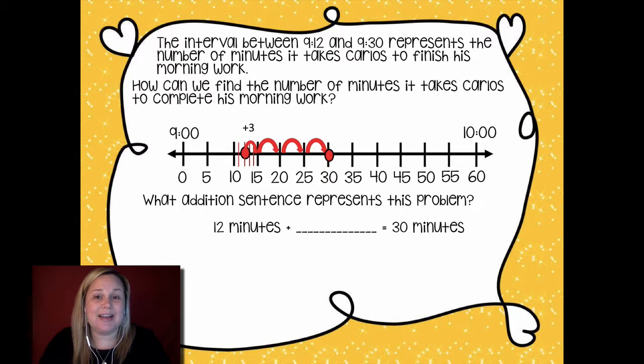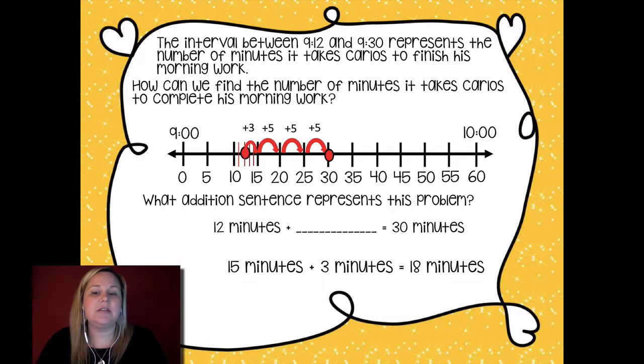I jumped three from here. I was at 9:12 to get to 9:15. So 9:12, 9:13, 9:14, 9:15. That's where that three comes from. From the 15 to the 20 minutes is five minutes. From the 20 to the 25 is five more, and from the 25 to 30 is five more after that. I'm going to group those together. That's going to give me 5 plus 5 plus 5 is 15. Don't forget to add that first jump of three, which gives me 15 minutes plus 3 minutes equals 18 minutes. That's how long it took from the 12 minutes to get to that 30 minutes. So 12 minutes plus 18 minutes equals 30 minutes. Carlos still has 18 minutes to complete his morning work after he writes his homework down.